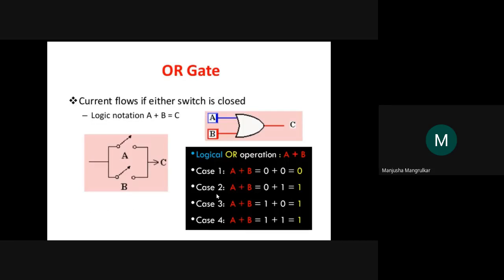OR gate means if either one input is one, the output is one. Current flows if either switch is closed — either A switch or B switch — the circuit will complete. The logical notation is C equals A plus B, where plus denotes OR. If both switches are open, output is zero.